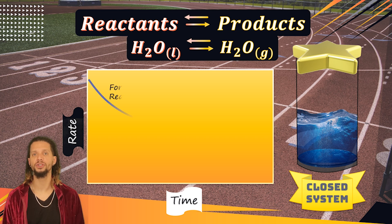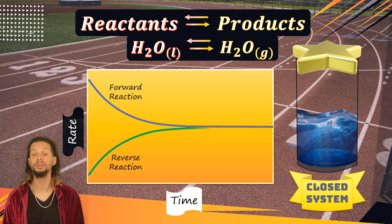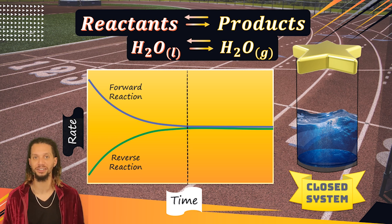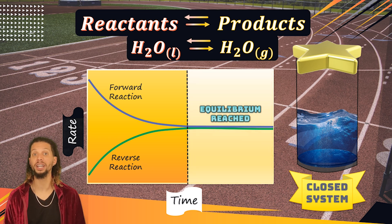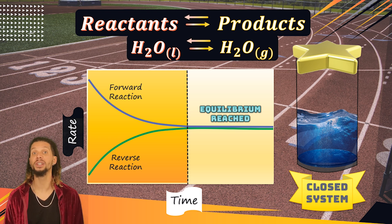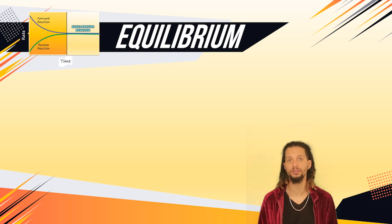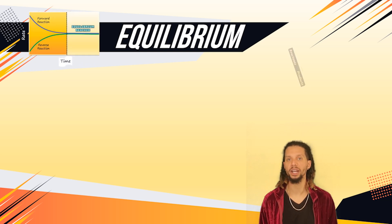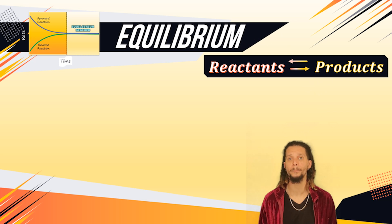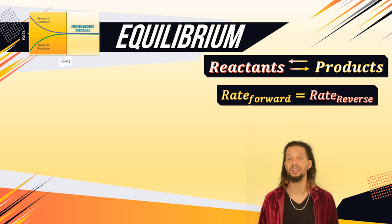At the start of this closed system race, the rate of the forward reaction will be faster than the rate of the reverse reaction, but because it is a closed system, this race never ends and will reach a point eventually where the rate of the forward reaction is equal to the rate of the reverse reaction. And when this happens, this race is said to be at equilibrium. Equilibrium is a dynamic condition represented by arrows going in both directions in a chemical equation, where the rates of opposing processes are equal or balanced to each other, and there are three types of equilibrium that determine the types of processes racing towards being equal to each other.